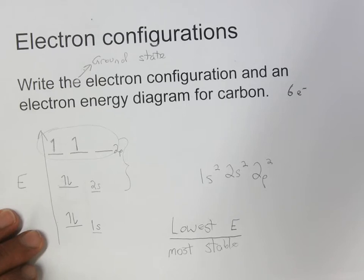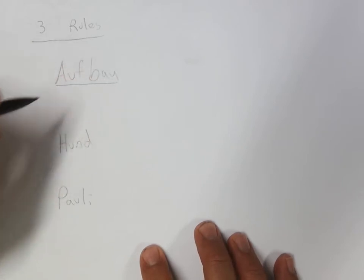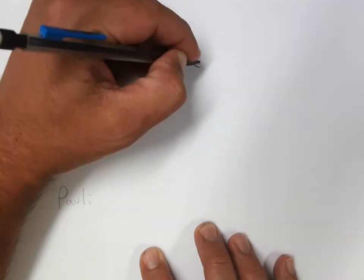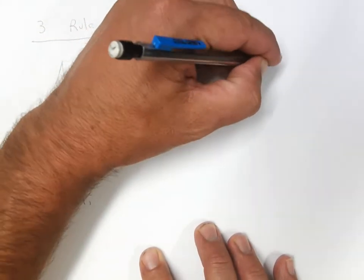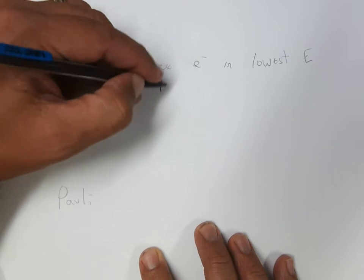There are other configurations that exist that are generally higher in energy. What I figured might be helpful is to review some of the rules for writing the ground state configuration, which I briefly mentioned last time, and then show what happens when you violate these rules — hopefully that will help you understand electron configurations a little better. So Aufbau, which literally means 'building up' in German, is: you place the electrons in the lowest energy orbitals that are available.